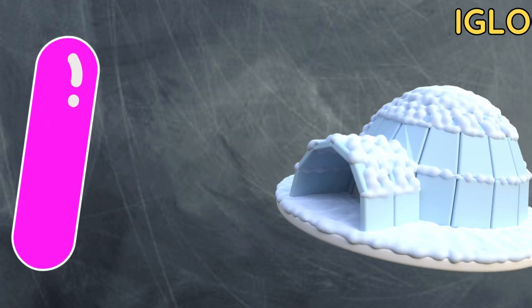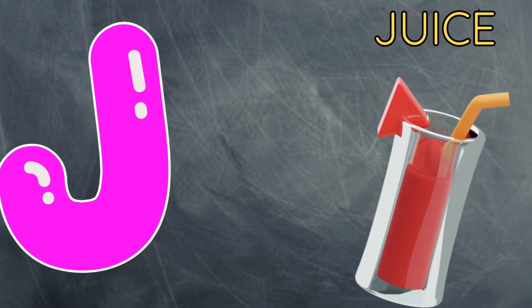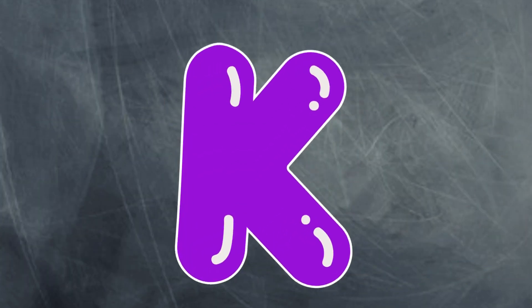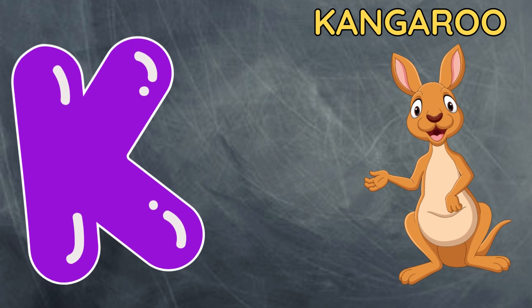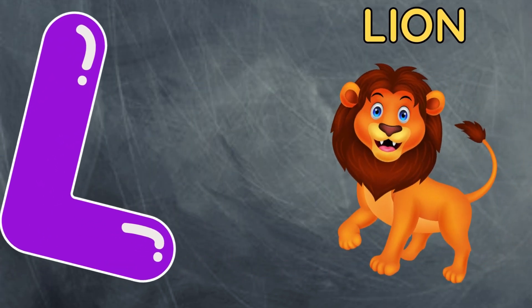I is for igloo, i-i-igloo. J is for juice, j-j-juice. K is for kangaroo, k-k-kangaroo. L is for lion, l-l-lion.